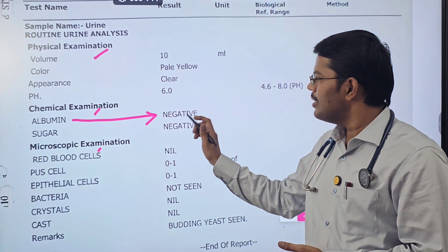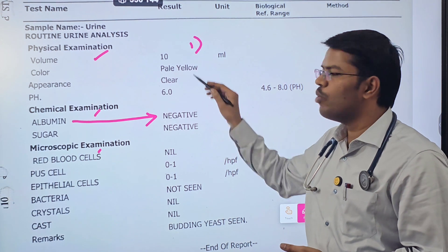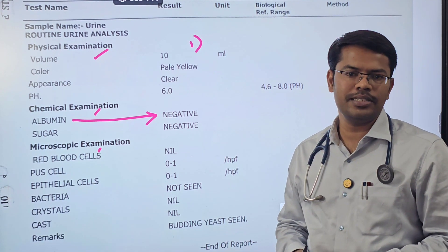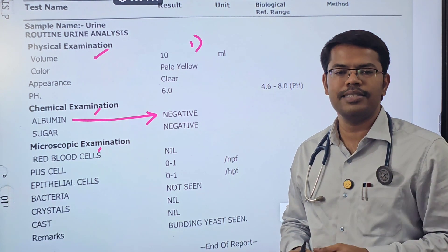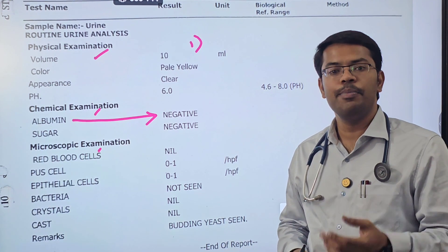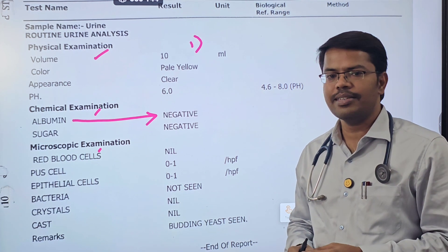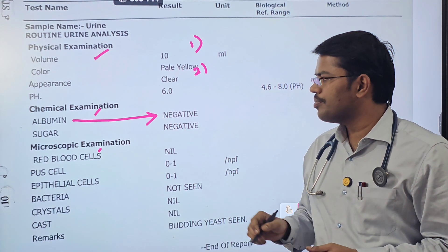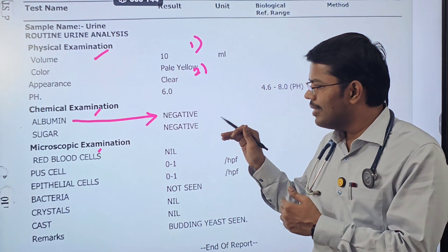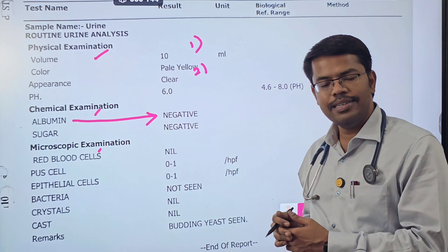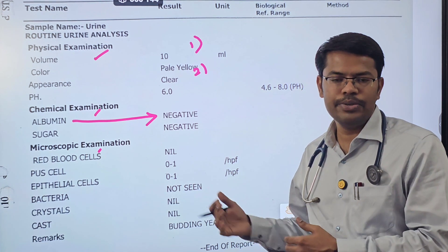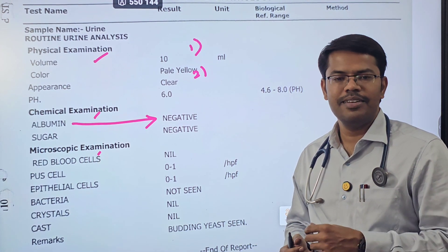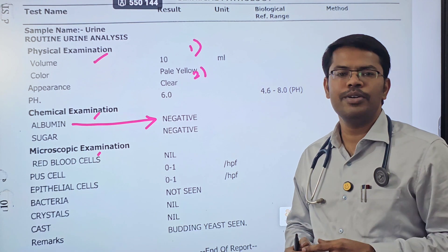First, it is a semi-quantitative test. Semi-quantitative means it won't tell exactly how much the person is excreting — only approximately. Second, this is being done as a routine analysis, a basic urine investigation.